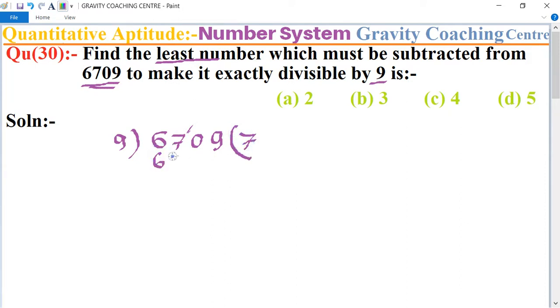9 times 7 is 63. Now we get 40. So 9 times 5 is 45, 9 times 4 is 36, so 36.